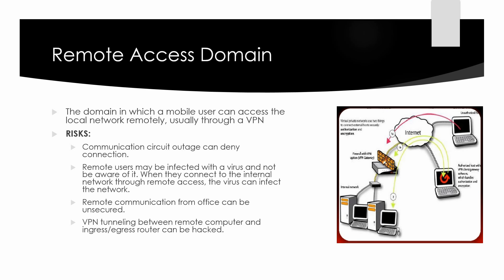However, vulnerabilities exist at two stages of a VPN connection. The first stage is authentication — when the user provides credentials to prove identity. If these credentials can be discovered, the attacker can later use them to impersonate the user. The second stage is when data is passed between the user and the server. If the data is sent in clear text, an attacker can capture and read the data.